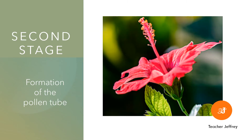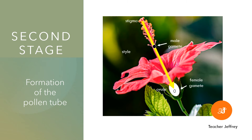The second stage is the formation of the pollen tube. This stage occurs in the style. When the pollen reaches the stigma, it is germinated by an enzyme to form the pollen tube. Its goal is to reach the ovule. The pollen on the stigma reacts with the enzyme and develops a pollen tube in the style, leading the male gamete to meet the female gamete in the ovule.